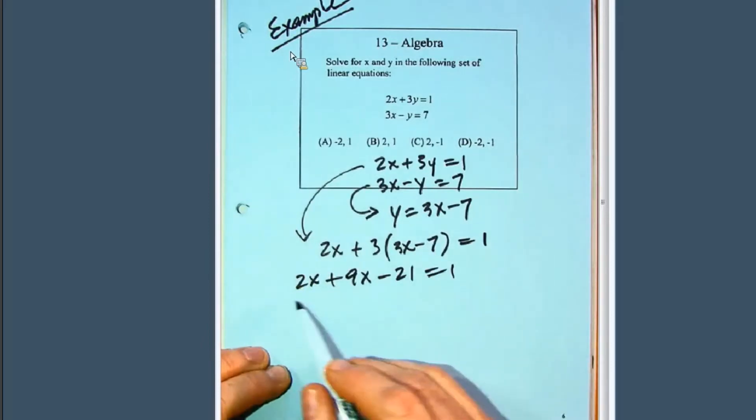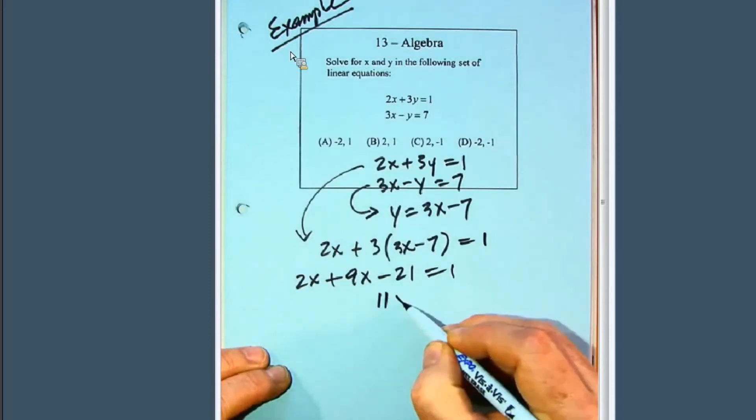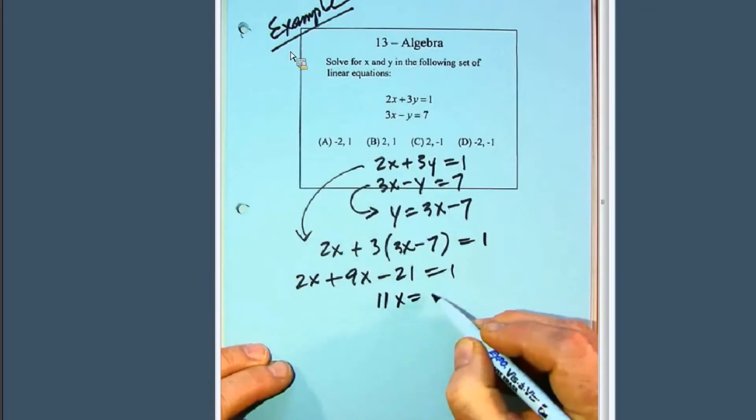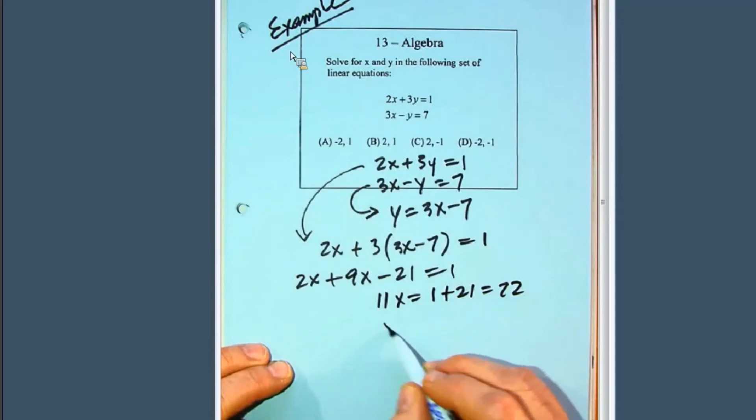So we've got 11, now we add 21 to both sides. What we've got is 11x equals 1 plus 21 equals 22. Well, if we now divide both sides by 11, we get x equal 22 over 11, which is equal to 2.